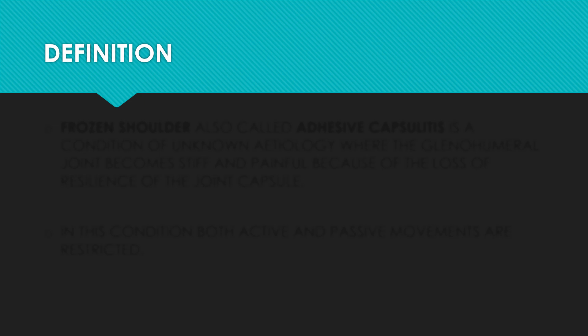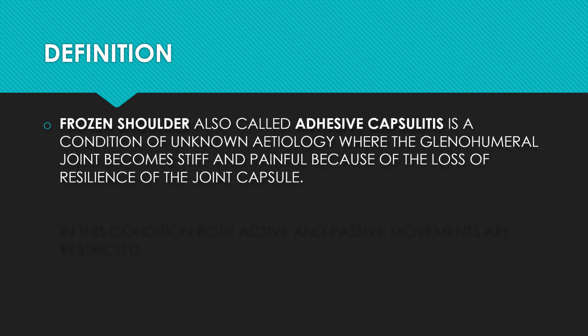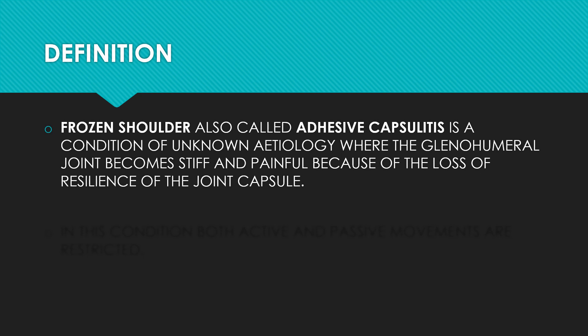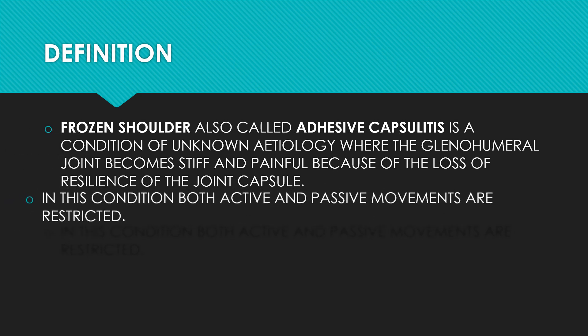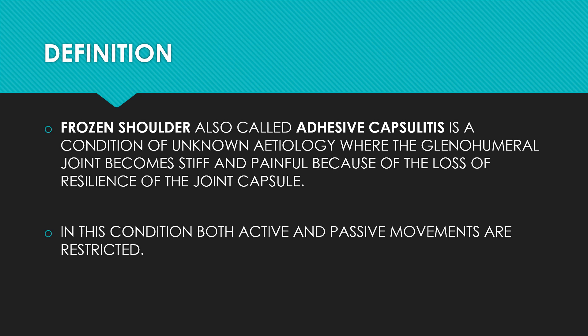Moving on, let us look at the exact definition of frozen shoulder. Frozen shoulder, also called adhesive capsulitis or periarthritis shoulder, is a condition of unknown etiology in which the glenohumeral joint becomes stiff and painful due to loss of resilience of the joint capsule. In this condition, both active and passive movements are restricted — this is a very important point, as it helps differentiate frozen shoulder pain from normal shoulder pain.